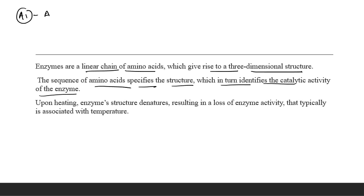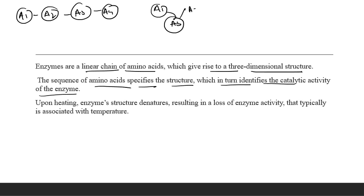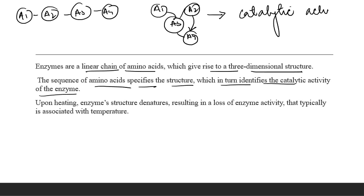If this is one sequence of amino acids and this is another sequence of amino acids, each sequence specifies to a structure of the enzyme and, according to different structures, the catalytic activities get slightly changed. So the sequence of amino acids identifies the structure and in turn identifies the catalytic activity of the enzyme.